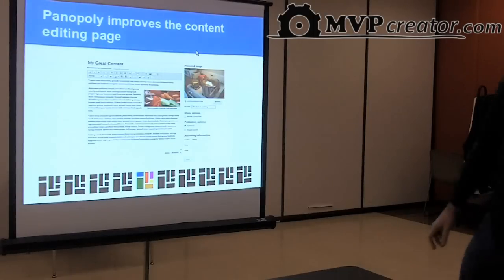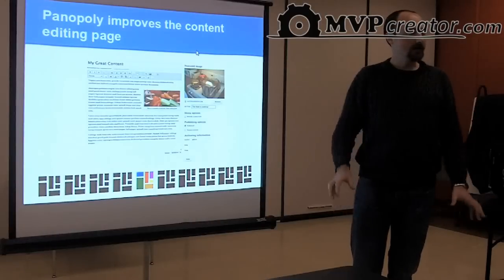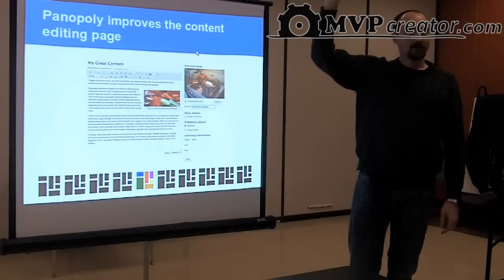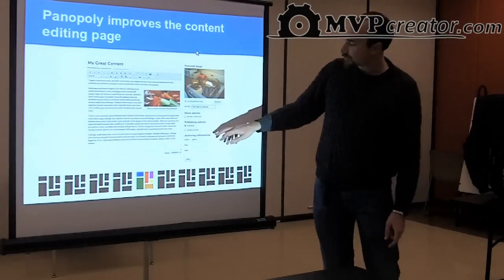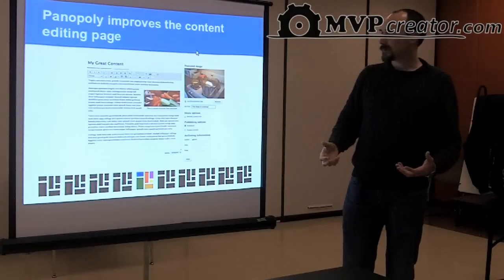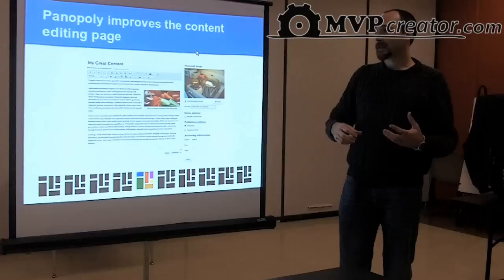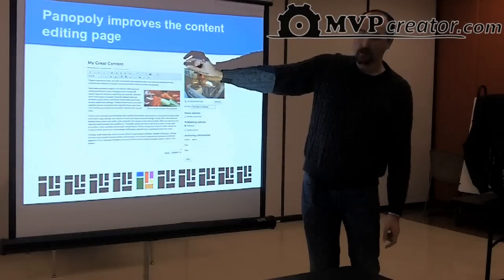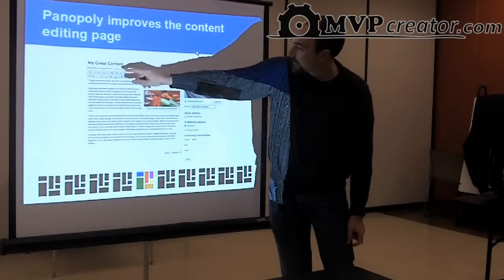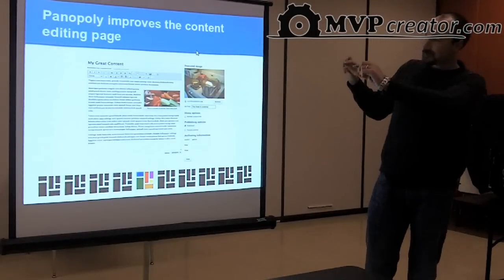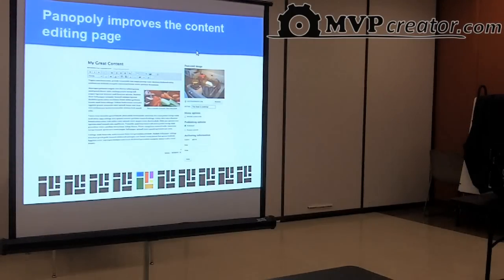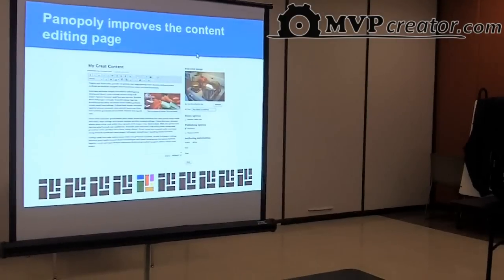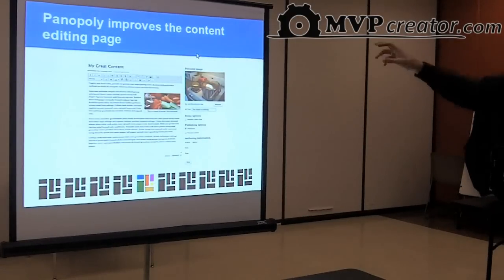Panoply puts the content editing page into a two-column layout — the way it's going to be in Drupal 8 — and removes a whole bunch of complicated options that make no sense, reducing it down to the bare minimum you need. The title is really big and at the top, like a title should be. The URL is also at the top but made tiny so it doesn't distract you. A lot of thought went into taking away the Drupalisms and giving people what they need. And this page is a panel, so if you wanted to change the content editing experience for your distribution, you could just go into Panels and move things around.